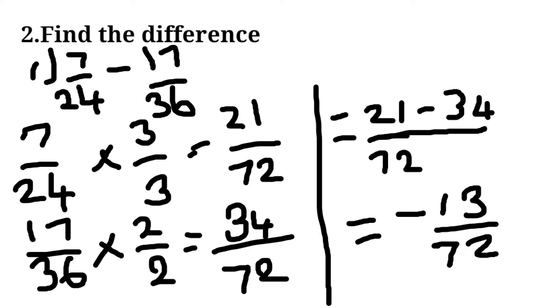Find the difference. First sum: 7 by 24 minus 17 by 35. Here LCM is 72 and then we multiply the according numbers and we subtract and we get the answer minus 13 by 72.